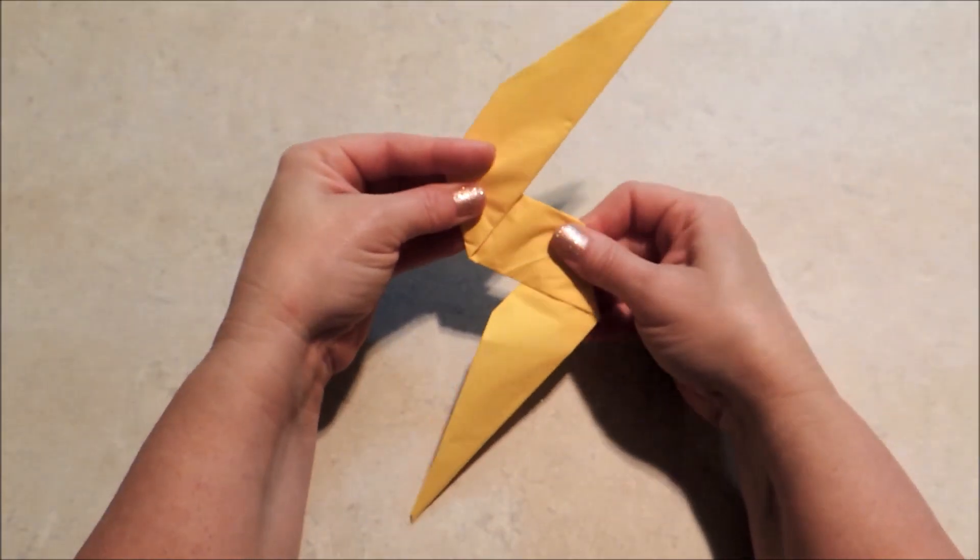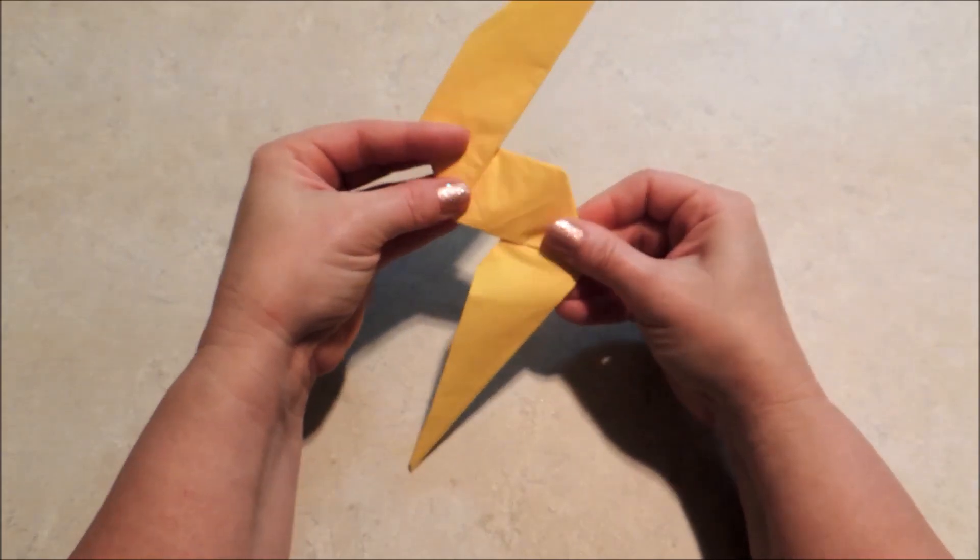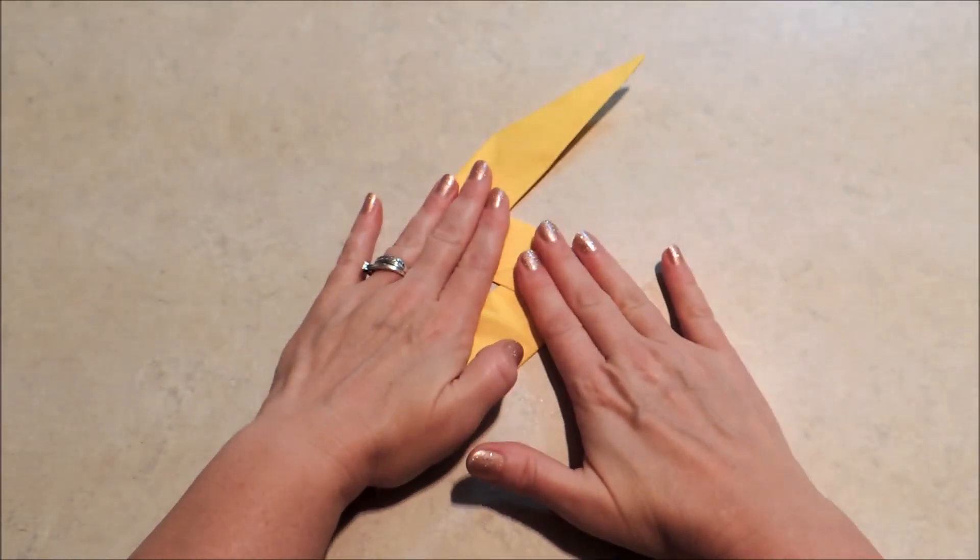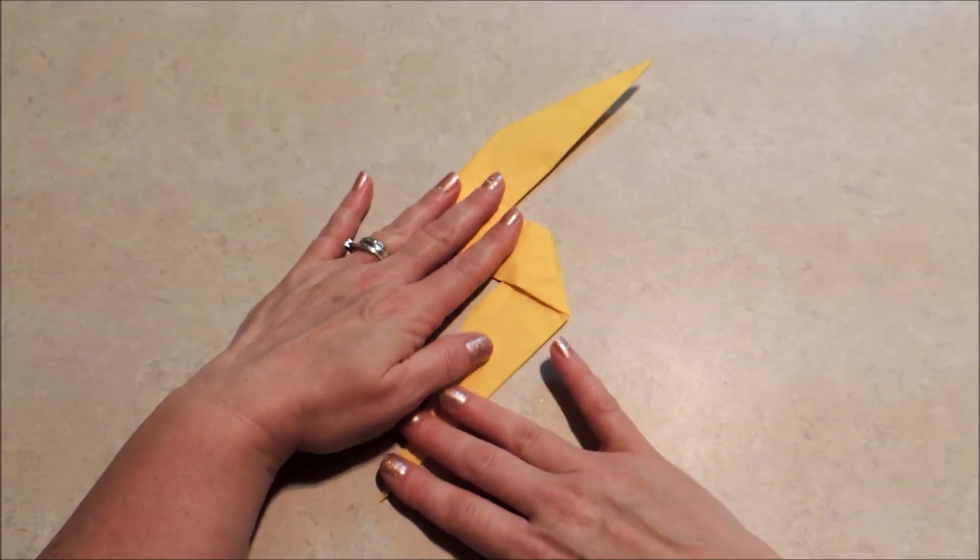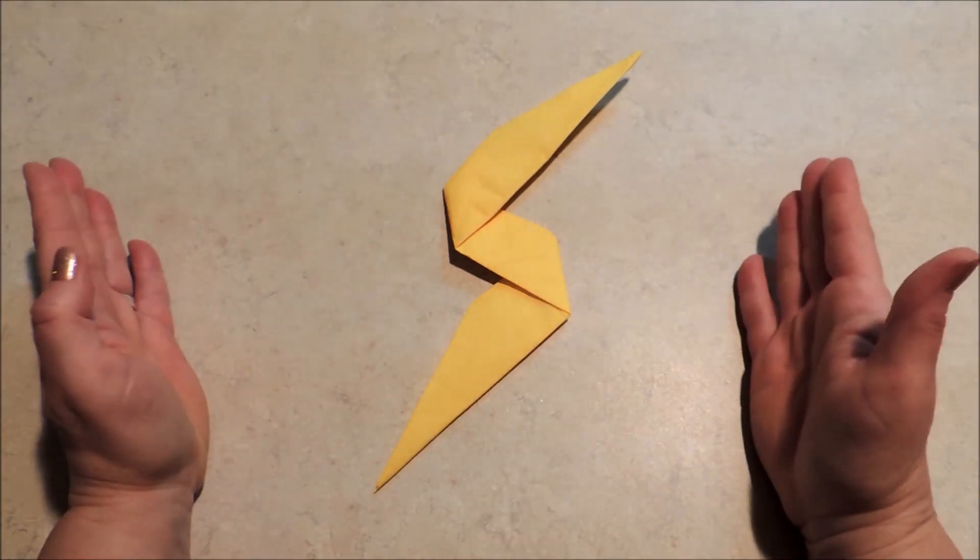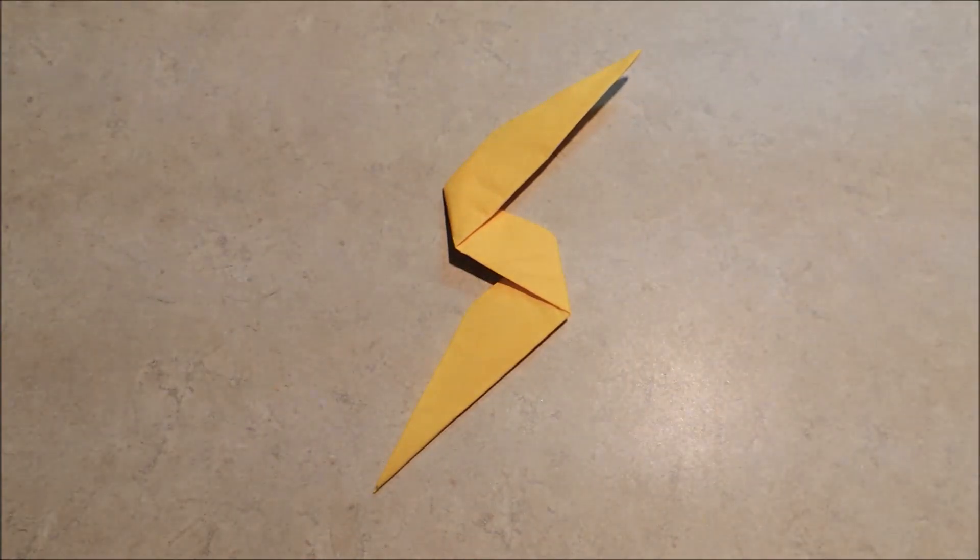And then when you get it where you want it, press those down and crease that. And you've got a lightning bolt. Now, all we have to do to turn that into a Flash table setting is add a couple of plates and a placemat.